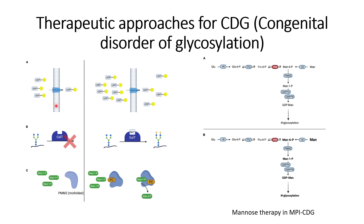One of the approaches is that the problem of abnormal glycosylation could be because of a low amount of the UDP-mannose enzyme. Because of the low availability of this enzyme, it will not be able to perform its function properly. One solution is that oral injection of this enzyme might reverse the impact of low UDP-mannose enzyme levels, so that it can further take part in the normal glycosylation process, such as during the initiation of asparagine-linked glycosylation.